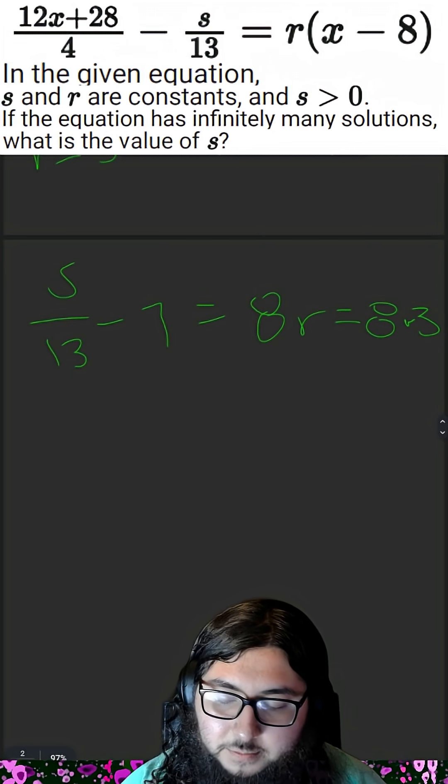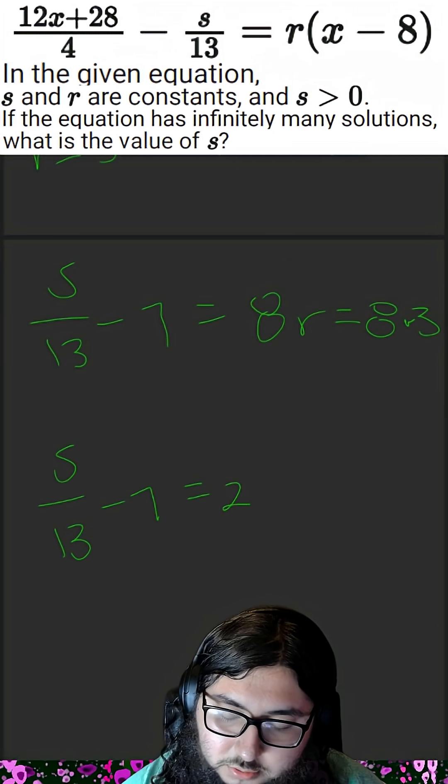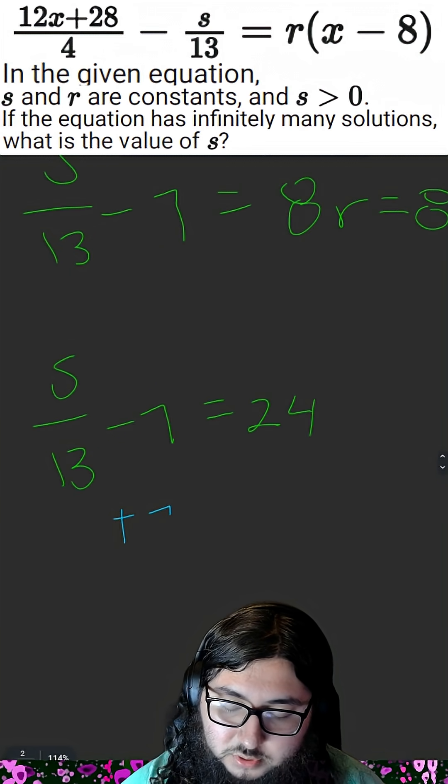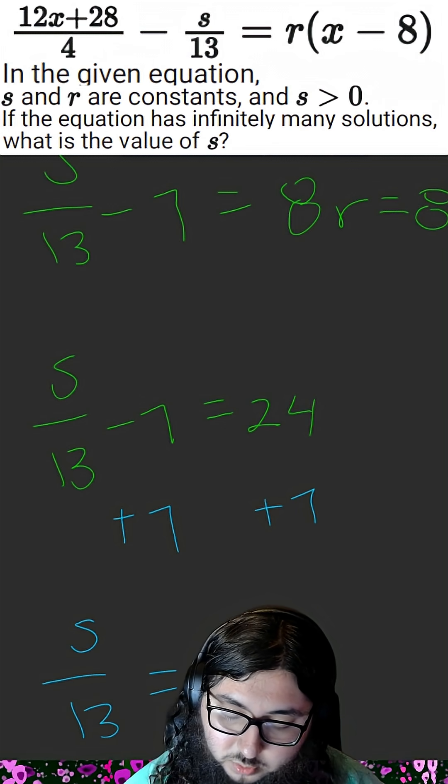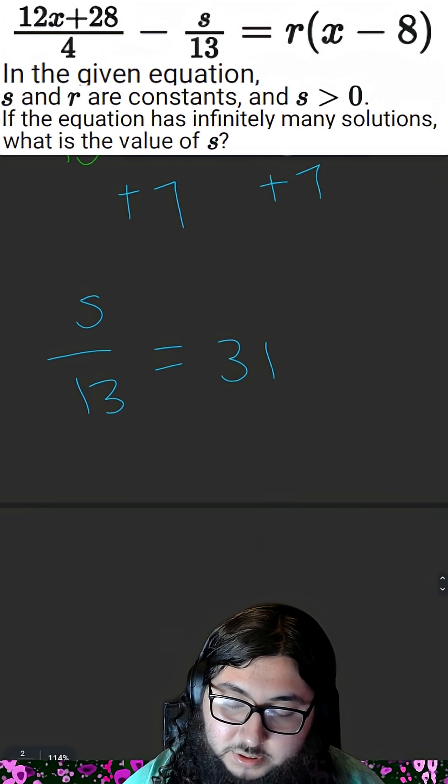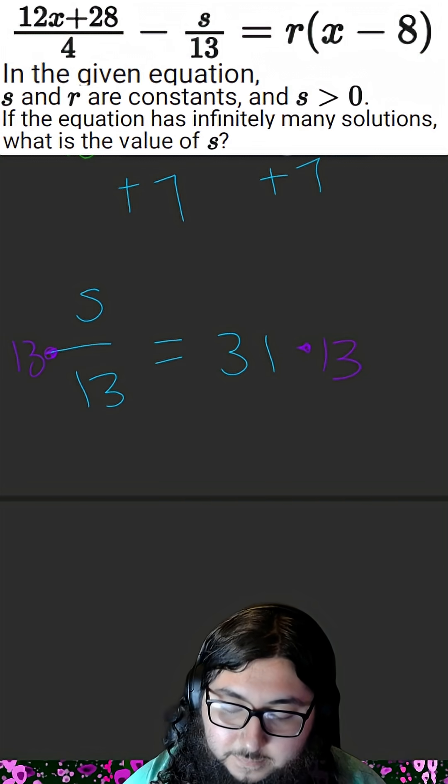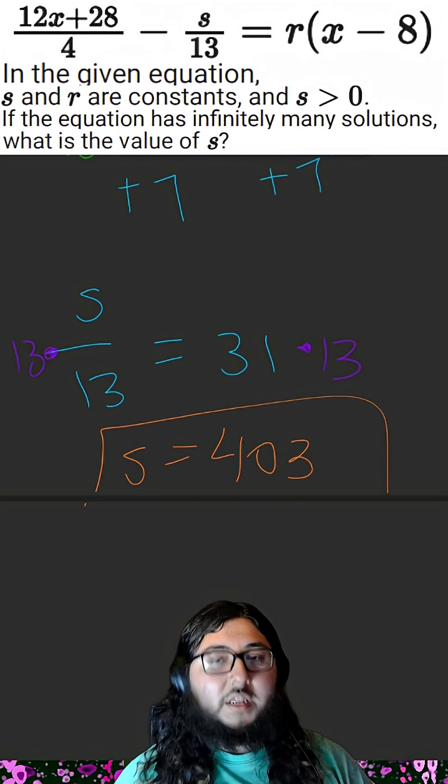From there, it becomes simple algebra. s over 13 minus 7 is therefore equal to 24. According to the rules of algebra, we're going to add 7 to both sides. s over 13 is equal to 31. Then we'll multiply by 13 on both sides, and we get that s is equal to 403.